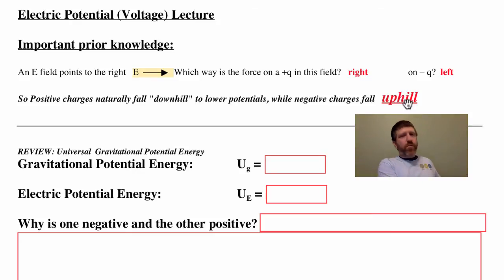So positive charges naturally fall downhill to lower potentials, while negative charges actually fall uphill. Got a little demo to help us remember this. This red sphere right here, which represents positive charge, it rolls downhill. And when I mean downhill, I really mean to lower electric potentials. Now the interesting thing is that negative charges actually fall uphill.